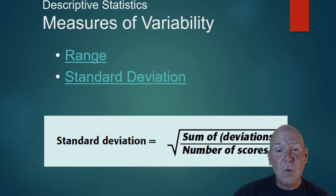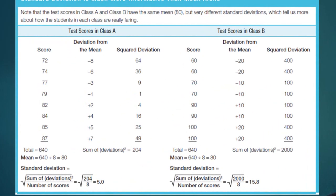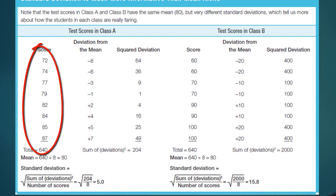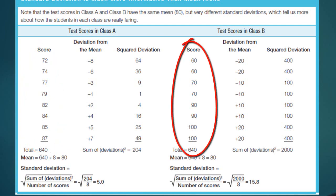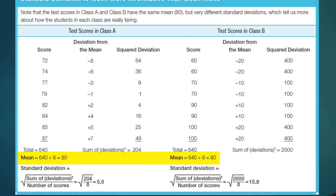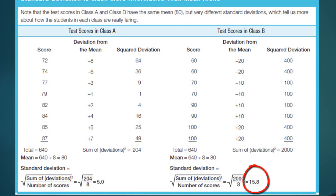If we do research and test a group of people and we have a huge standard deviation, there's a good chance some chance incidents caused that. But if they're all similar, it's more likely to be accurate, and the mean will mean more. Look at this chart showing test scores in class A and class B. If we calculate the mean, both classes have a mean of 80 — so it sounds like both are doing really well. But the standard deviation in class A is only 5, while in class B it is 15.8, meaning the numbers spread out much more in B. Class A really is performing closer to 80% than class B, and the standard deviation lets us know that.